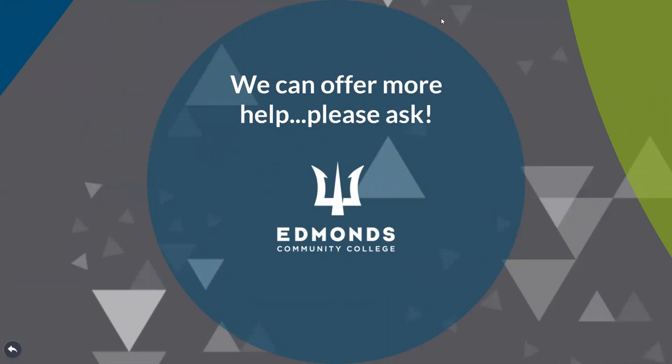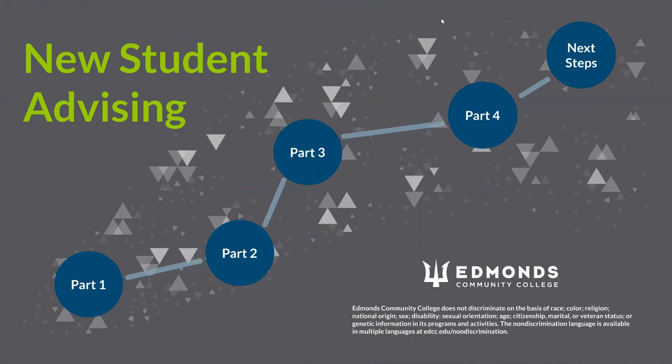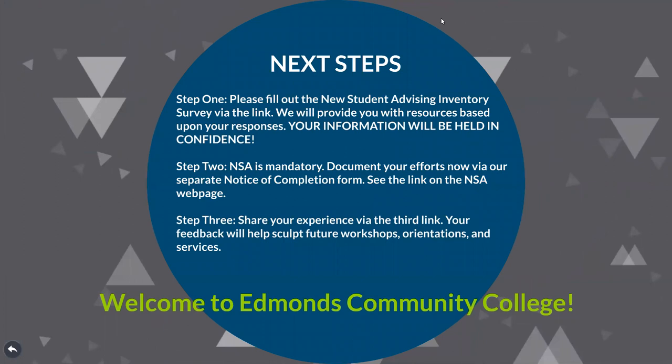There are many ways that the Edmonds Community College campus can support you. Our presentation here is by no means exhaustive, so please reach out if you need assistance with anything — we're happy to get you connected. This concludes our New Student Advising videos. Thank you for watching. To fully complete New Student Advising, please complete the steps above. NSA is mandatory, so you must complete the Notice of Completion through the link on the NSA webpage. We hope you have a great first quarter, and welcome to Edmonds Community College!